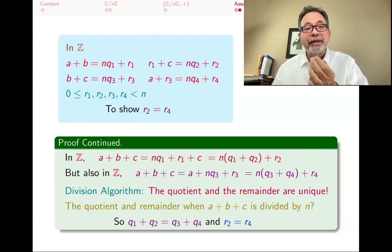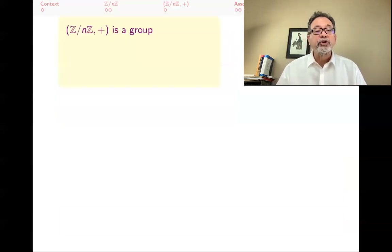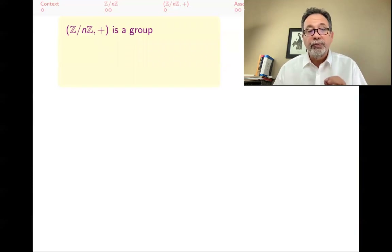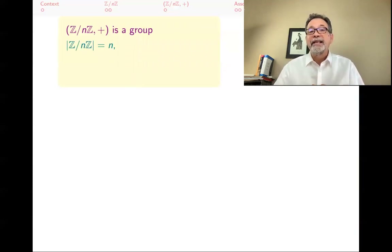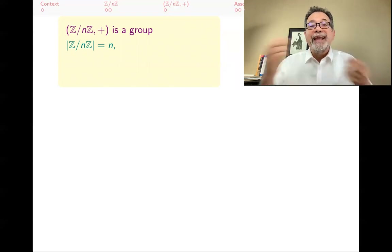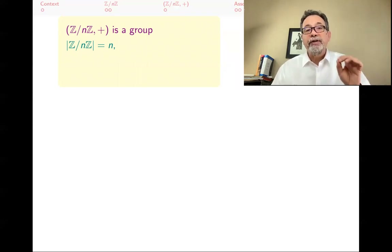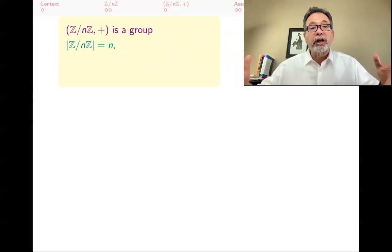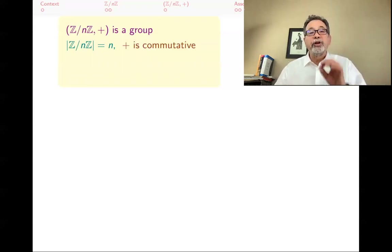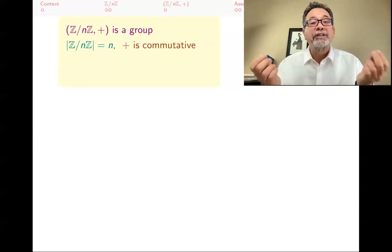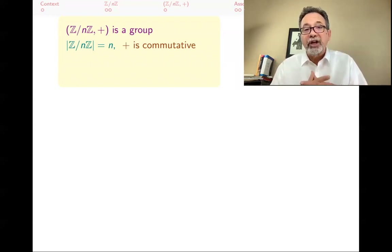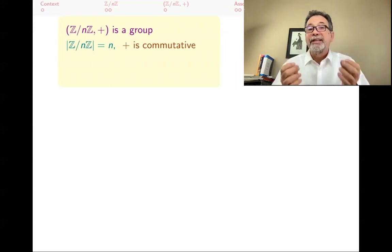So Z mod nZ with addition mod n is a group. It's a group that has n elements. This is nice because now you know an example of a group of any order you want — give me a group of order 47, and you say Z mod 47Z; give me a group of order 153, Z mod 153Z. This is actually a commutative group, in the sense that a plus b and b plus a are the same. That's not one of the properties of groups in general — groups do not have to be commutative — but this group is.